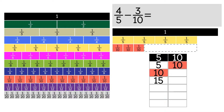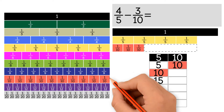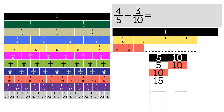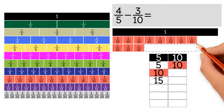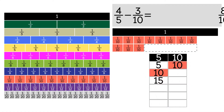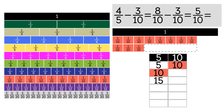So to solve, we're going to use fraction strips with 10 in the denominator. Two strips of 1 tenth fit into 1 fifth, so we have 8 tenths. Now that we have a common denominator, we can subtract. 8 tenths minus 3 tenths equals 5 tenths, which is equivalent to 1 half.